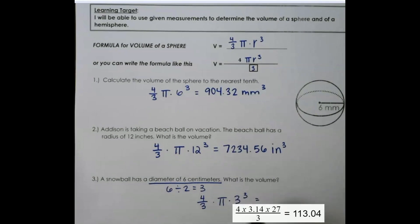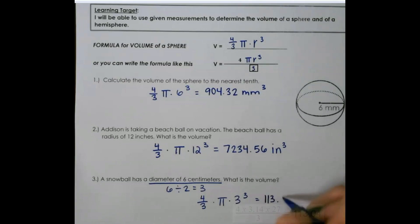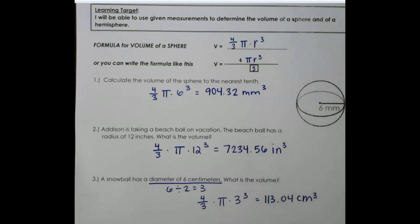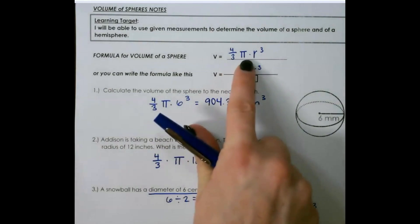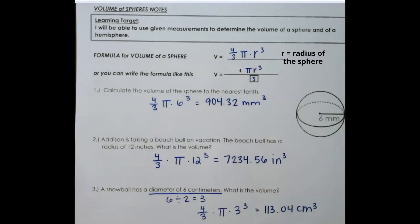And again, plug this into your calculator, and that will give you 113.04, and that would be centimeters cubed. So don't forget, your formula for volume of a sphere is four-thirds pi r cubed. Let's get started.